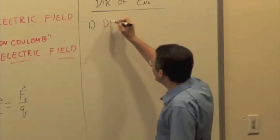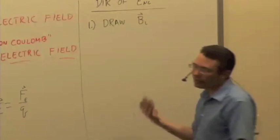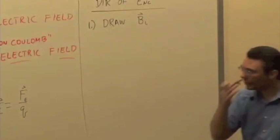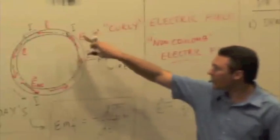And the first step is you want to draw the initial magnetic field at the location you're interested in. So for example, inside this loop if we were trying to find the electric field around this loop.